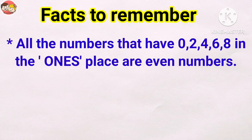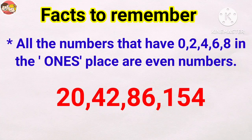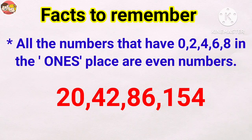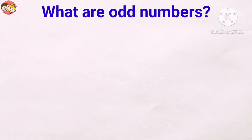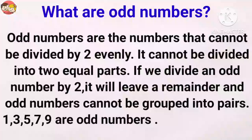In the same way, twenty, forty-two, eighty-six, one hundred fifty-four, etc. are all even numbers because these numbers end with zero, two, four, or six. Now, what are odd numbers? Odd numbers are the numbers that cannot be divided by two evenly — they cannot be divided into two equal parts.